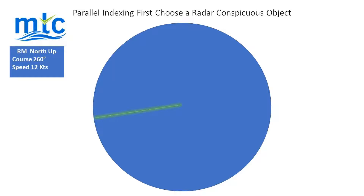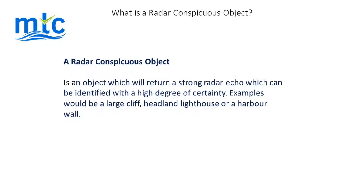How do we use parallel indexing? The first thing to do is a chart inspection for the area where parallel indexing is to be used, and then choose a radar conspicuous object. A radar conspicuous object is one that will return a strong radar echo and which can be identified on the chart with a high degree of certainty.